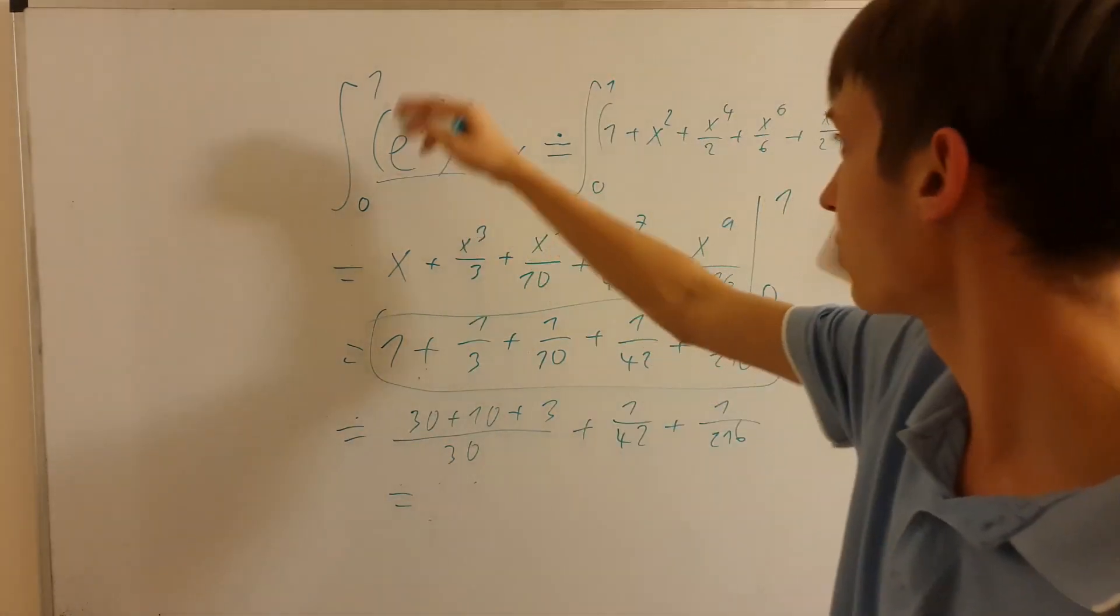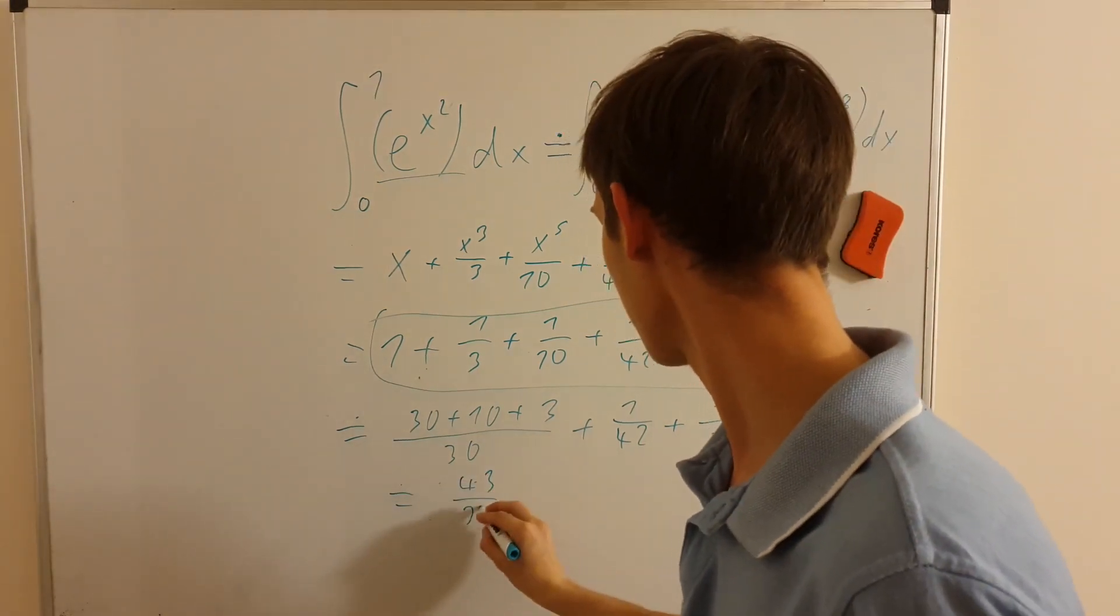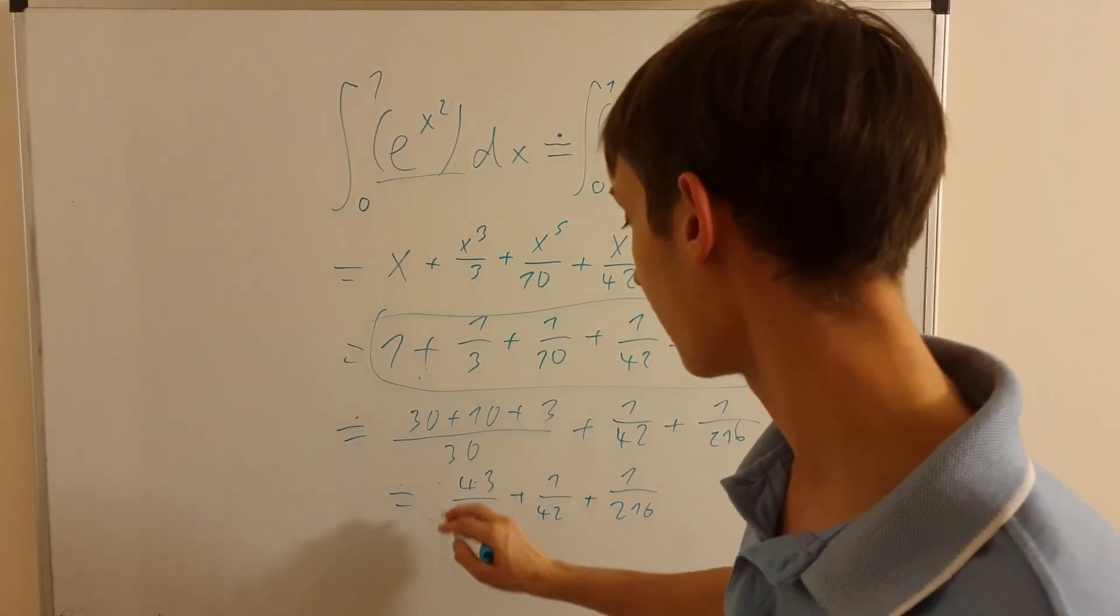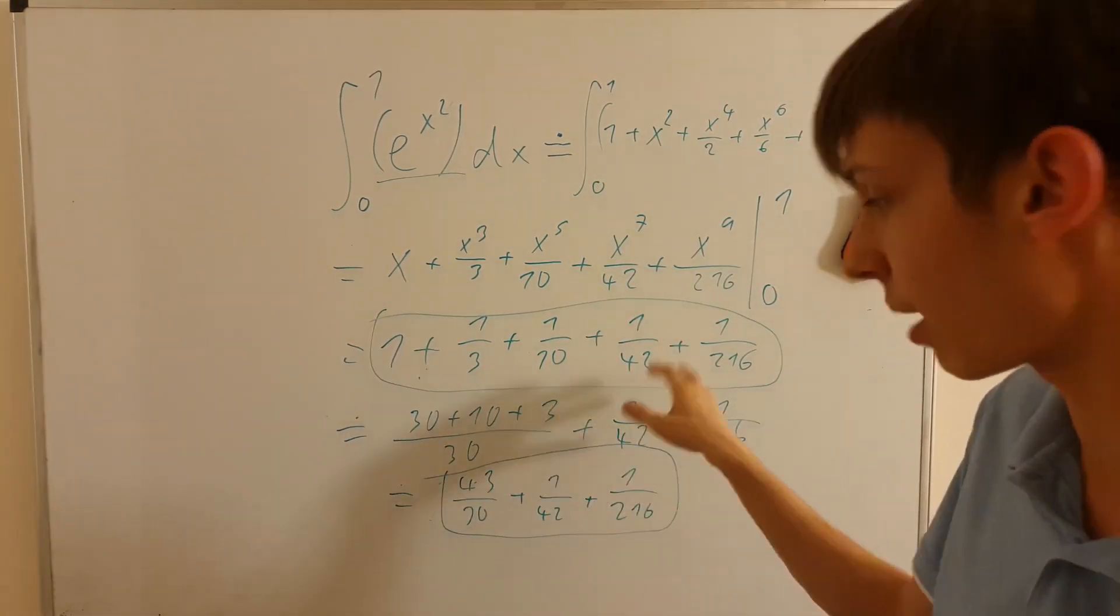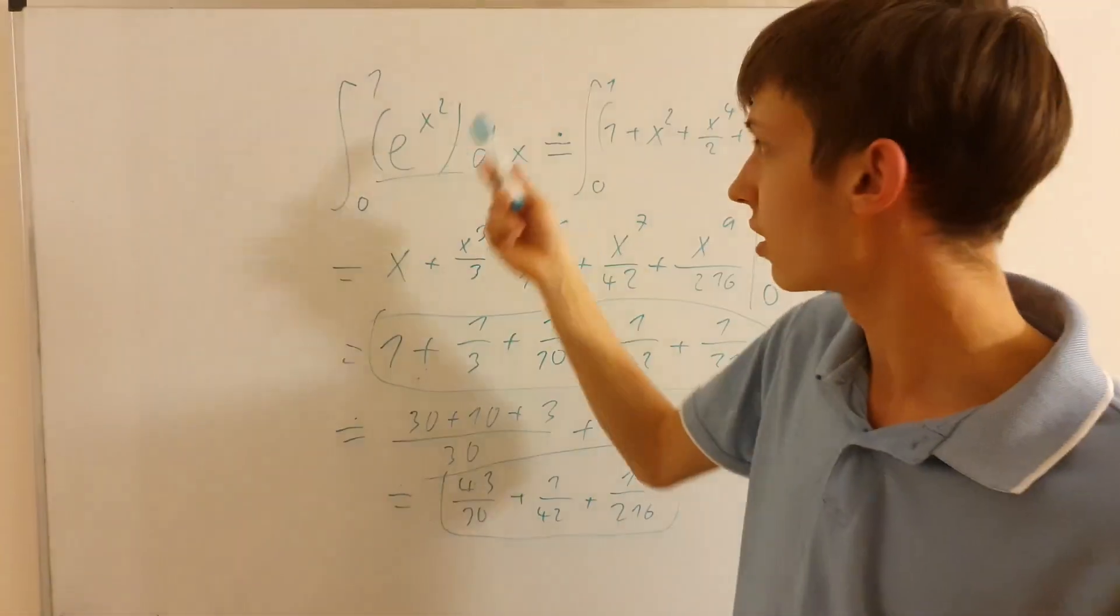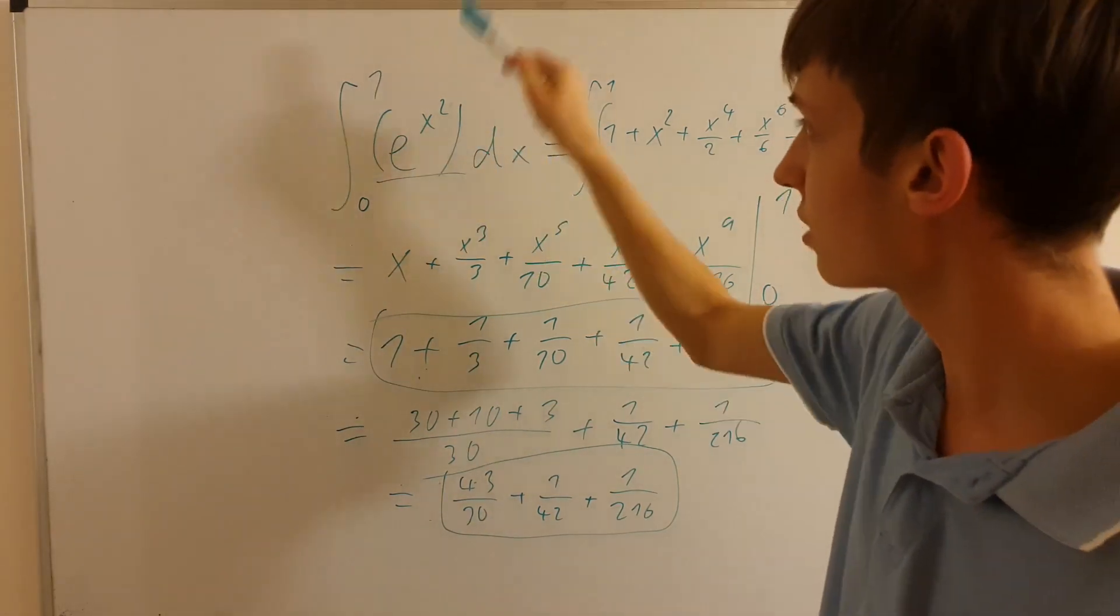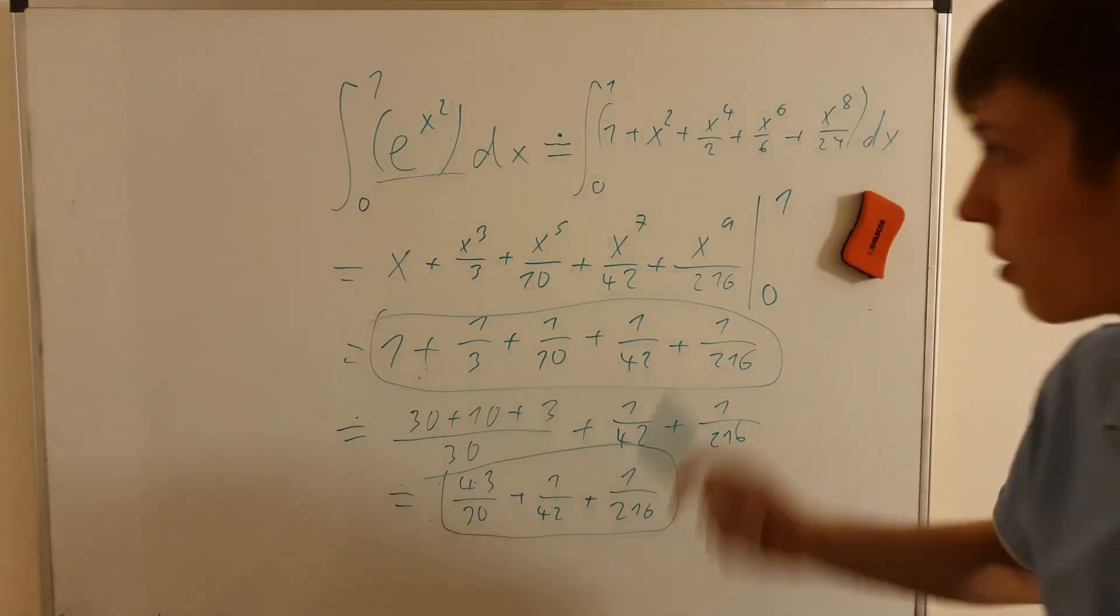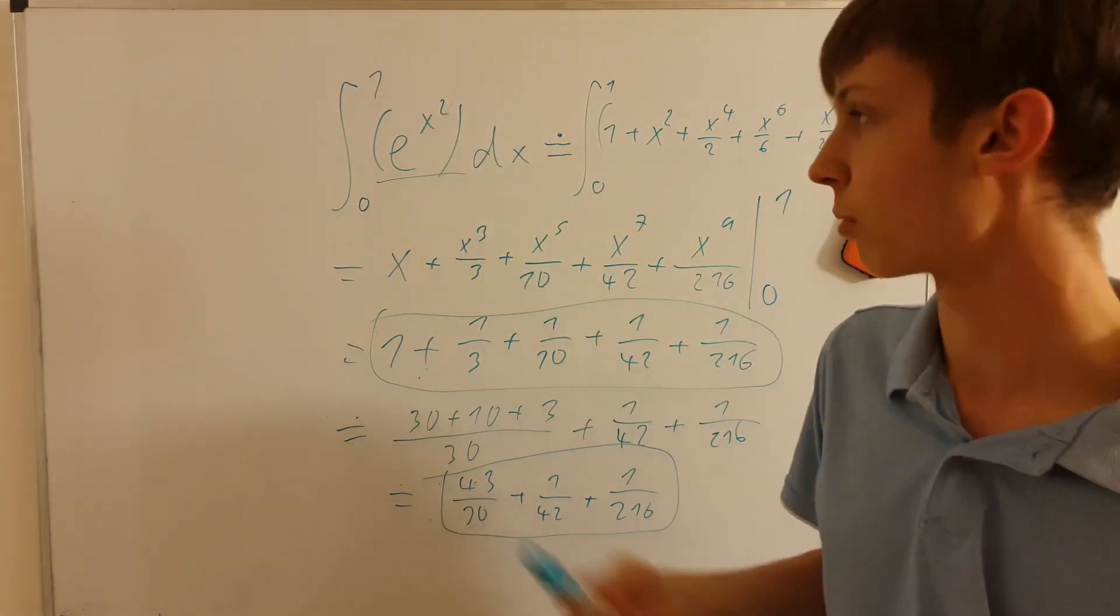But in any case, this integral from 0 to 1 of e to the x to the second, should be roughly equal to 43 over 30 plus these two more numbers. When using just the first five terms of the Taylor expansion to approximate. And this can be, of course, put into a calculator and evaluated as a decimal number all together. But it's not so easy to do right now on the board. But in any case, the point here was, we were having this function e to the x to the second. And there's always an option to just replace this thing by a Taylor series expansion, put it straight inside the integral, integrate this polynomial that represents it as usual, and then evaluate the polynomial as the initial function would have normally be evaluated.